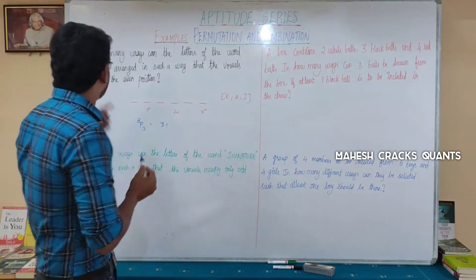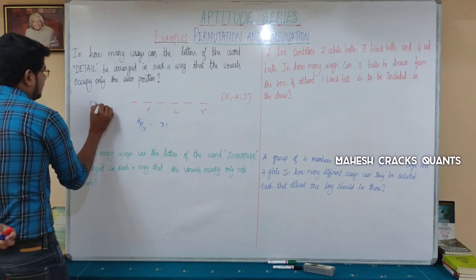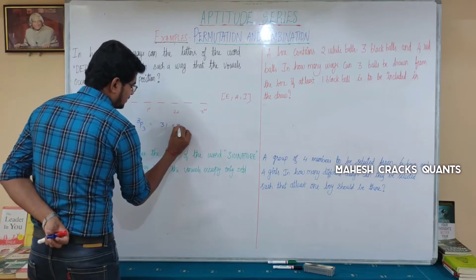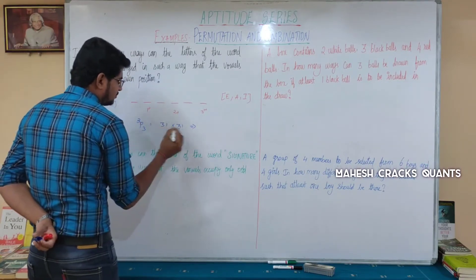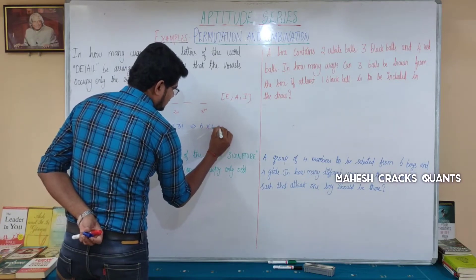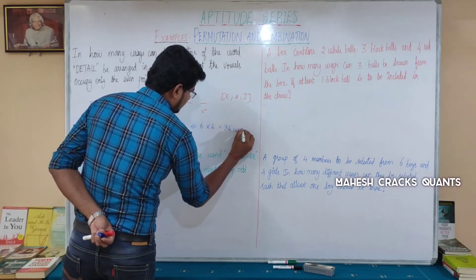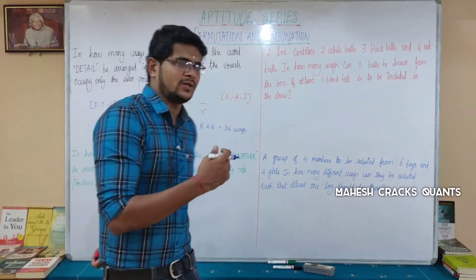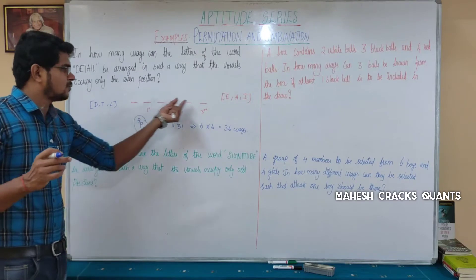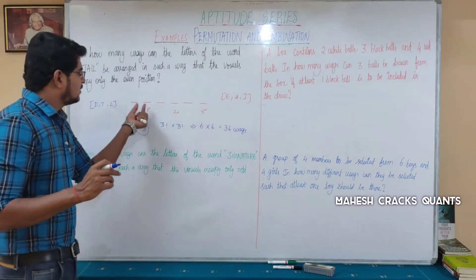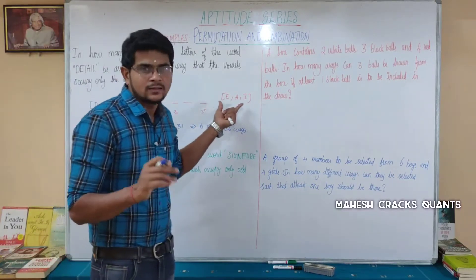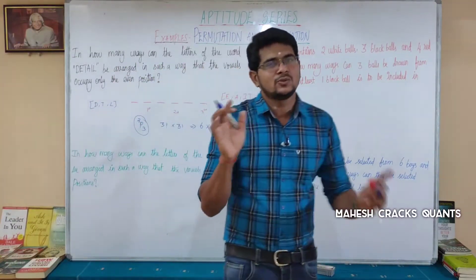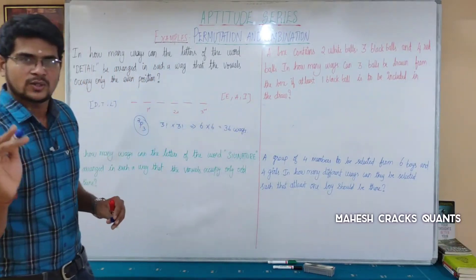The remaining letters are D, T, and L — again three letters — which can be arranged in 3 factorial ways in the odd positions. So the total answer is 3 factorial × 3 factorial, which is 6 × 6 = 36 ways. Three into two into one equals six, so six times six is 36.